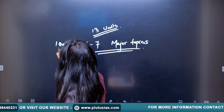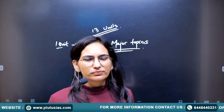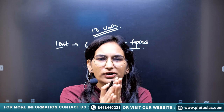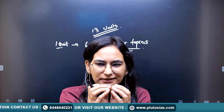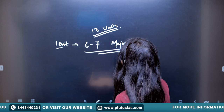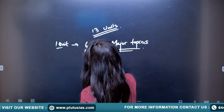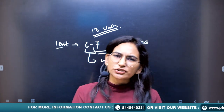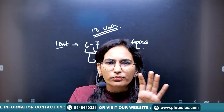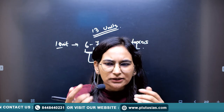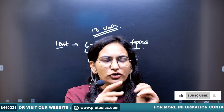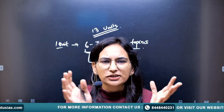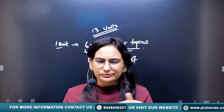So how much practice do you require under one unit? With an average of 6 to 7 major topics per unit, the strategy says that for each major topic you should practice approximately 100 questions. Within each topic, there are 4 to 5 question types, and practicing about 20 questions per type is enough.